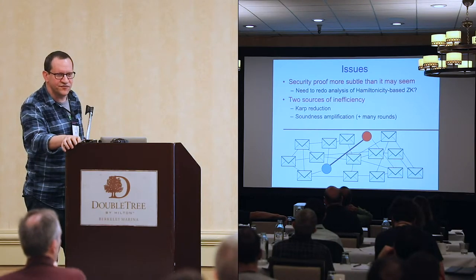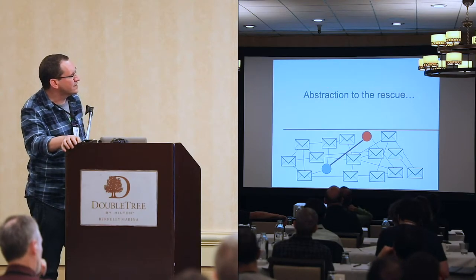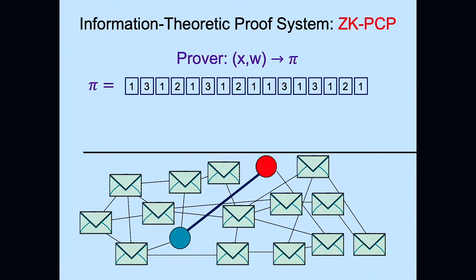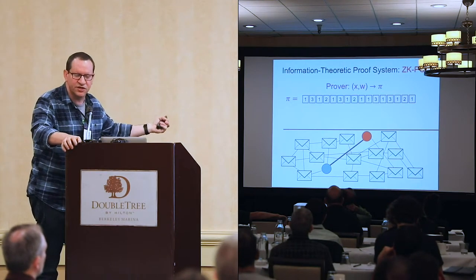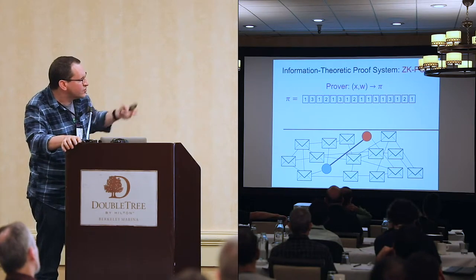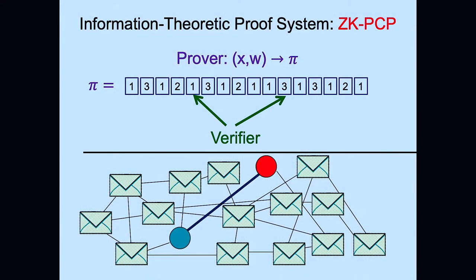This introduces the first kind of abstraction that distills the information-theoretic component from the general proof system: the zero-knowledge PCP. The prover produces a proof string π over some finite alphabet, probabilistically generated given the input and witness (in this case the color of each node after the permutation). The verifier makes randomized point queries to this proof string, reading a randomly chosen subset of symbols and deciding whether to accept or reject.